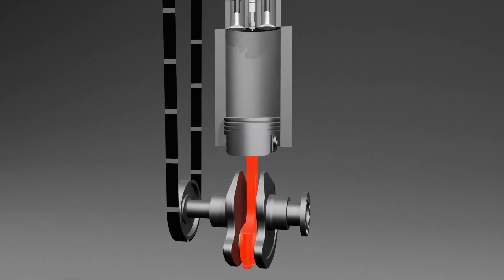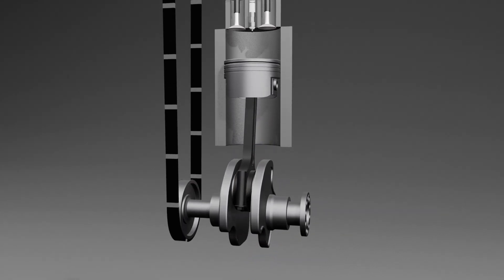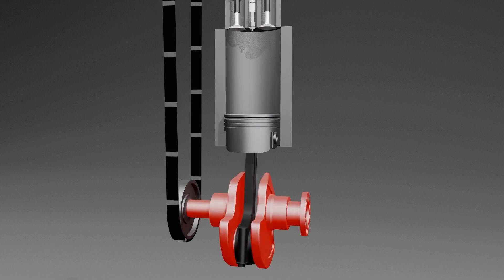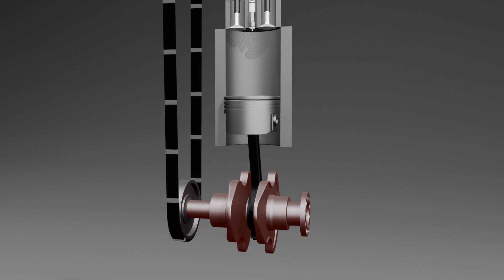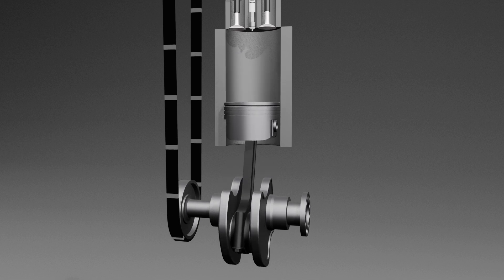The connecting rod links the piston to the crankshaft and transmits the piston's motion to the crankshaft. The crankshaft converts the piston's up and down motion into rotational motion, ultimately driving the gearbox.